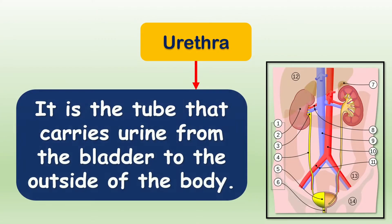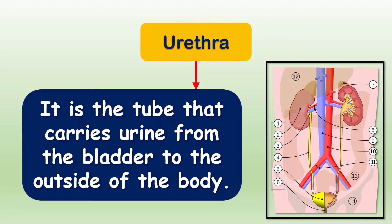Urethra is the tube that carries urine from the bladder to the outside of the body. As you can see in the picture, the last one — the sixth structure — is the urethra.